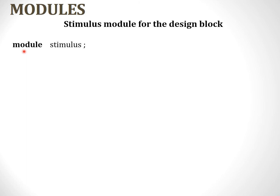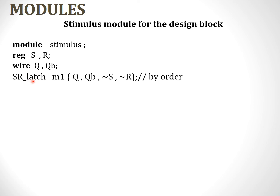There are no input/output declarations. Following the first rule, all input variables are declared as reg — the input variables of the SR latch, S and R, are declared as reg. All output variables are declared as wire — Q and Q-bar are declared as wire. Then we instantiate the design block using exactly the same name: SR_latch, followed by a compulsory instance name. I have used M1, indicating instance one of the module — you can use any name.